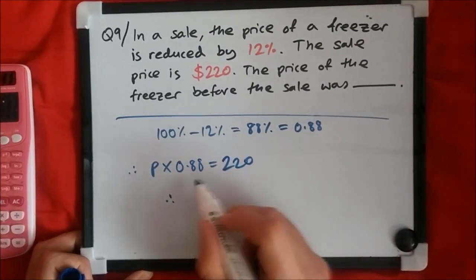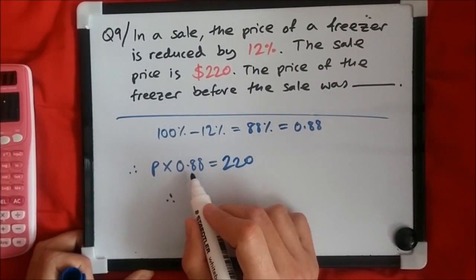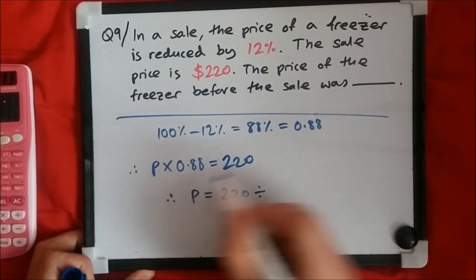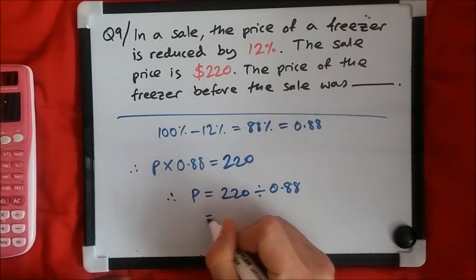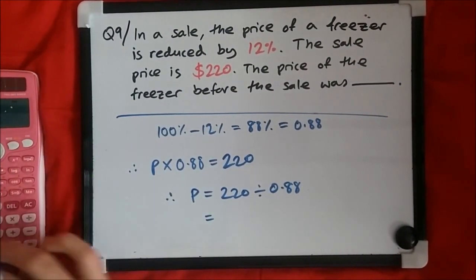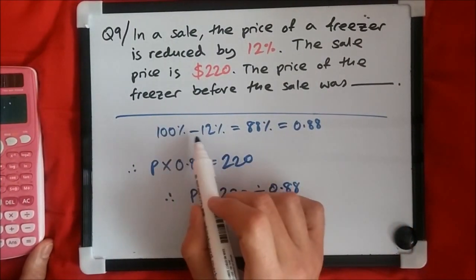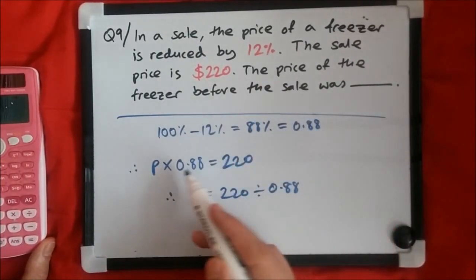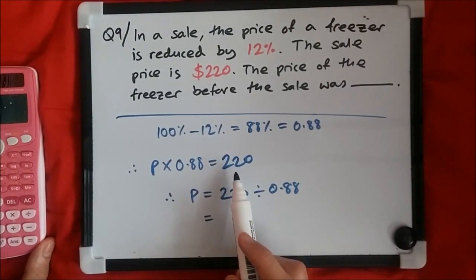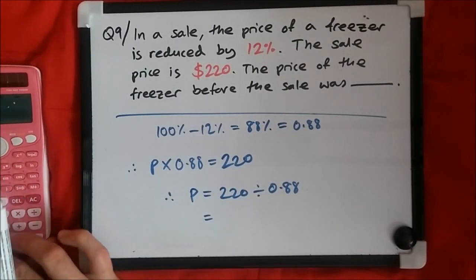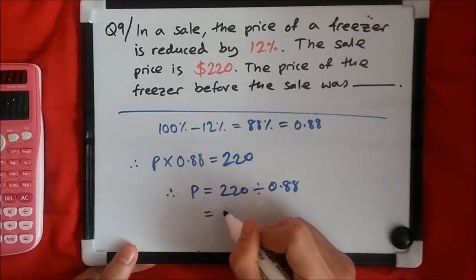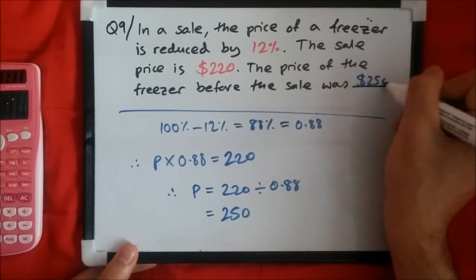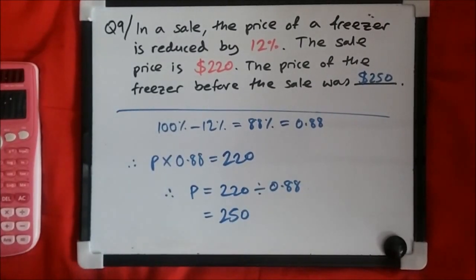Just like before, instead of dividing by 1.06, we divide by 0.88. So p equals 220 divided by 0.88. The key rule: if reduced, subtract from 100; if increased, add to 100 — that gives your scale factor. Dividing using a calculator, we get £250. So the original price before the sale was £250, meaning the buyer saved £30.